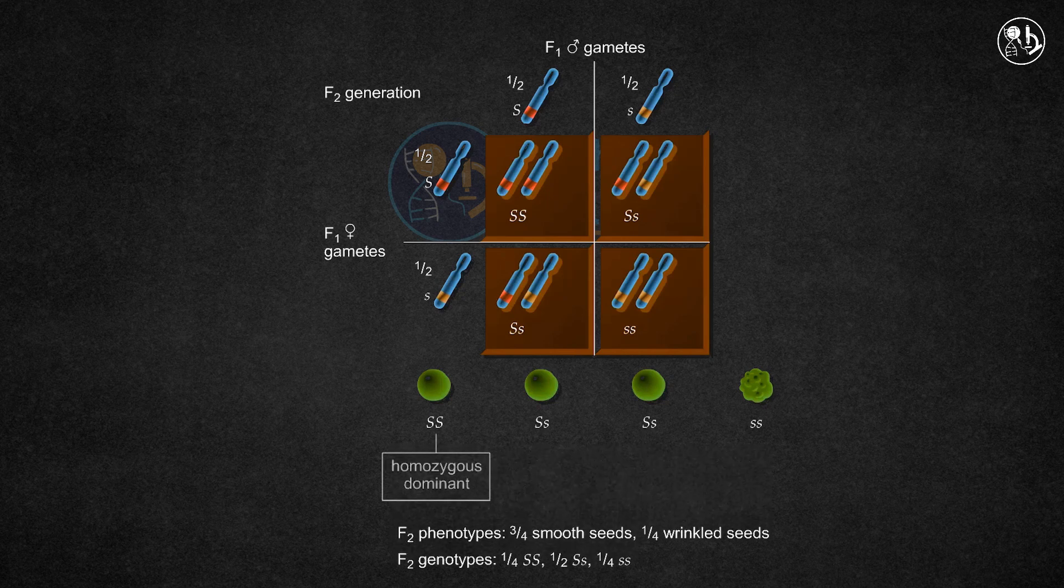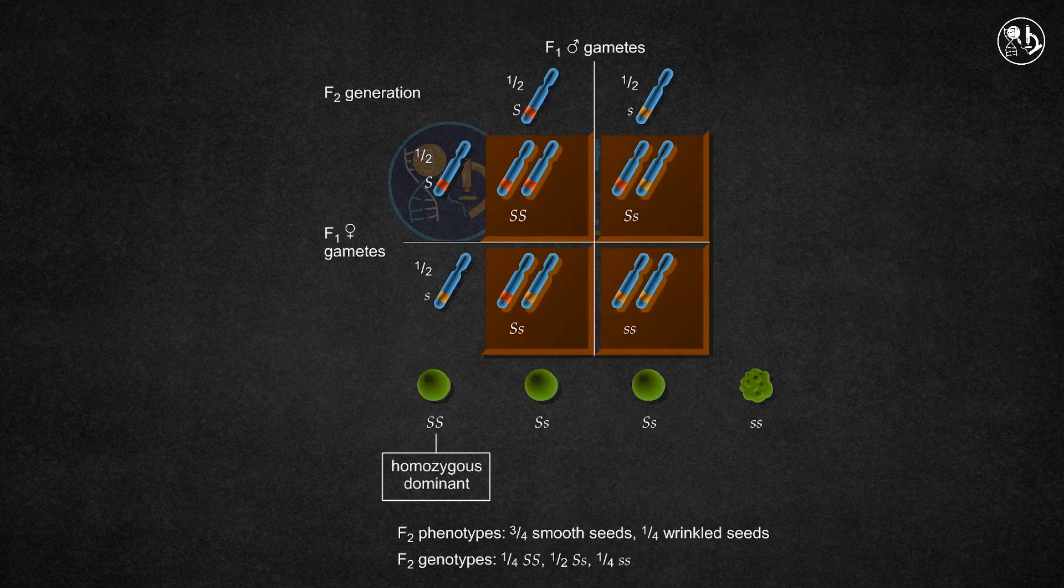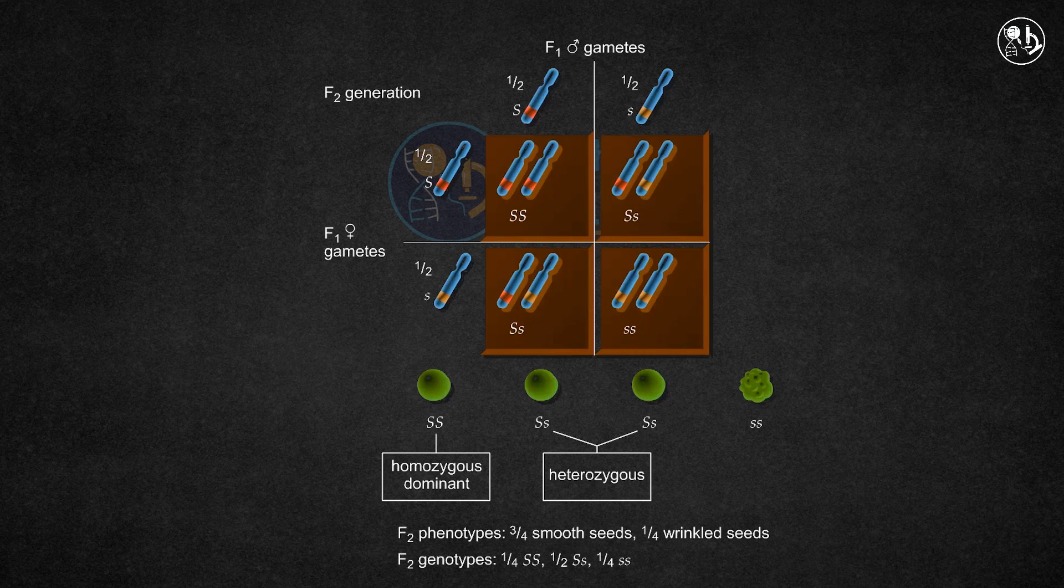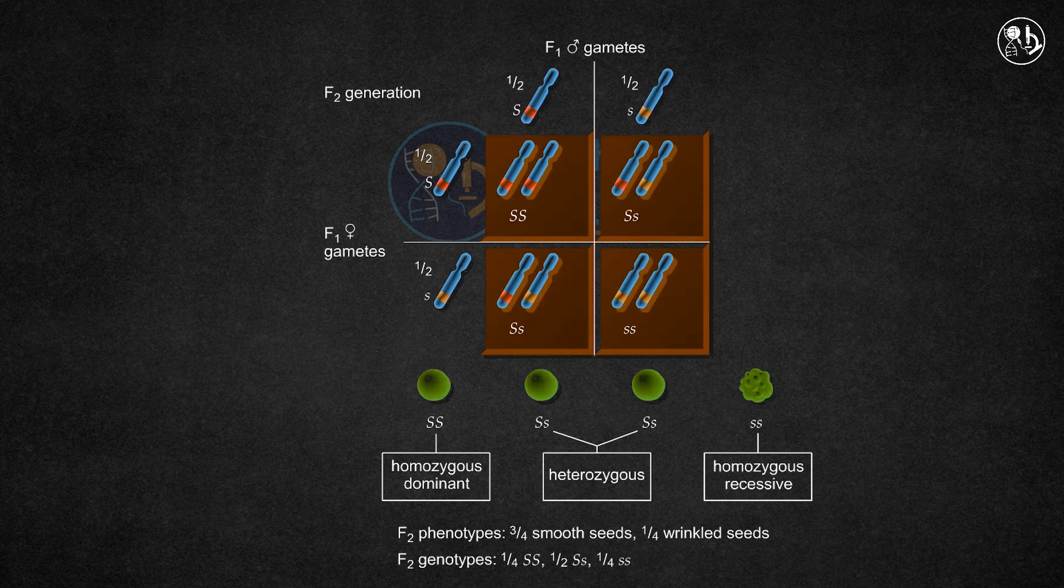The capital S capital S genotype is homozygous dominant, the capital S small s genotype is heterozygous, and the small s small s genotype is homozygous recessive. Mendel's monohybrid crosses supported his theories and he proposed the principle of segregation.